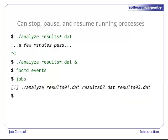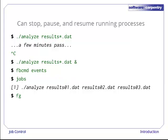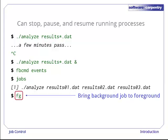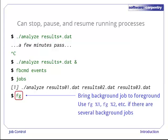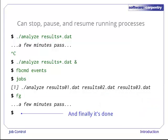Since there's nothing going on, let's run the jobs command. This tells us what processes are currently running in the background. Since we can't think of any other way to procrastinate, we use the foreground command fg. This brings our background job into the foreground. If we have several jobs running in the background, we can control which one we bring to the foreground using fg %1, fg %2, and so on. The IDs are not the process IDs — instead, they are the job IDs displayed by the jobs command. Finally, when Analyze finishes running, the shell gives us a fresh prompt, as usual.